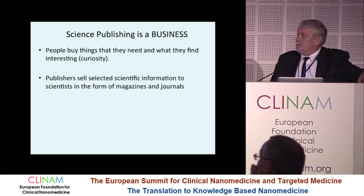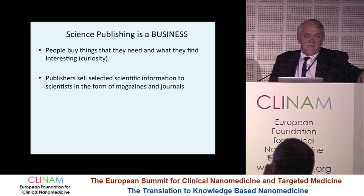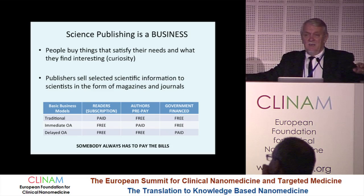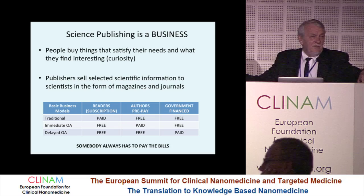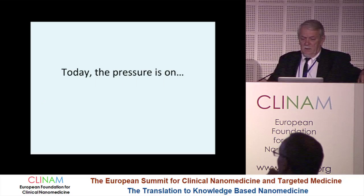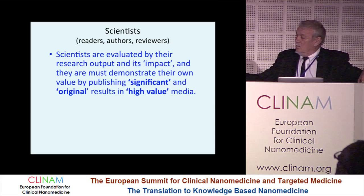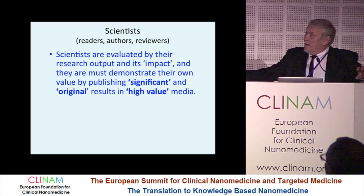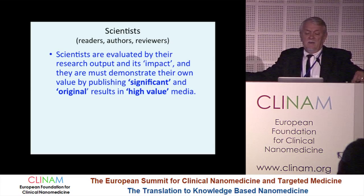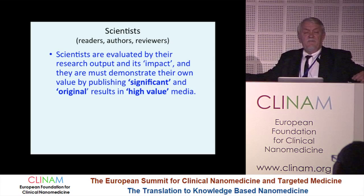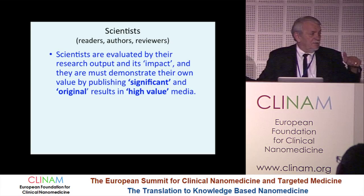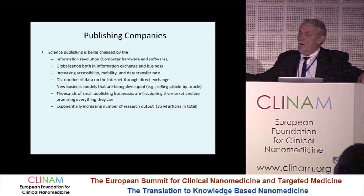Publishers essentially sell selected scientific information to scientists in the form of magazines and journals. There are different business models — somebody always has to pay the bills, because nothing is free. Today, the pressure is on scientists. They have all three qualities: they are readers, they are authors, and they are reviewers. They are evaluated by their research output and its impact. So they must demonstrate their own value by publishing significant and original results in high-value media. All we need to know is what is significant, what is original, what is high-value, and for whom.